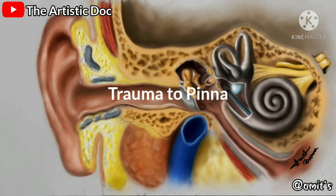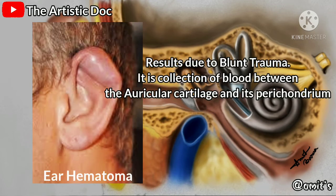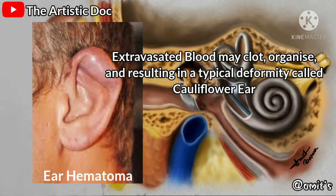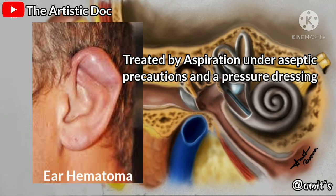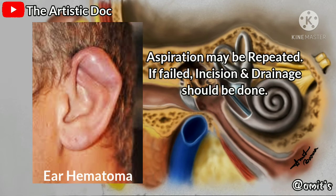Regarding trauma: hematoma of the pinna results from blunt trauma. A collection of blood is seen between the auricular cartilage and its perichondrium. Blood may clot and form a typical deformity called cauliflower ear. It is normally treated by aspirating the hematoma under aseptic conditions with pressure dressing. Aspiration may need to be repeated; if that fails, incision and drainage should be done.